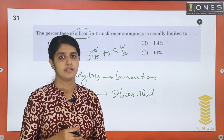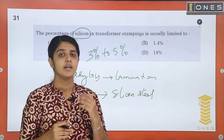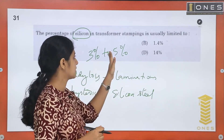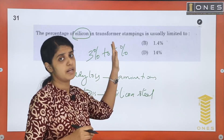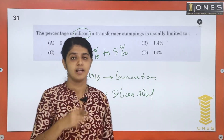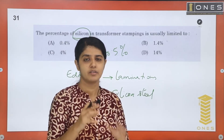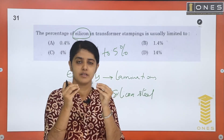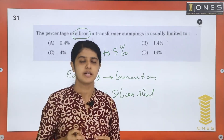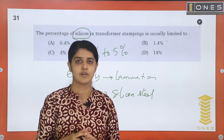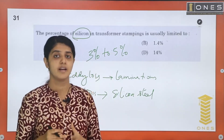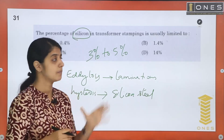Looking at the range, it is around 5 percent, equal to about 4 percent. If you add more silicon beyond this, the material will become brittle. So the silicon content must be kept within limits to avoid brittleness.